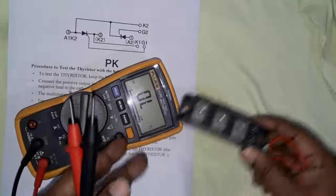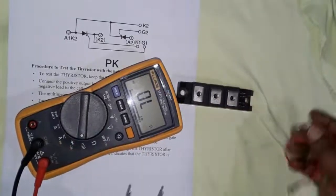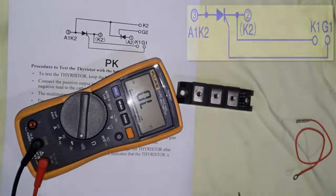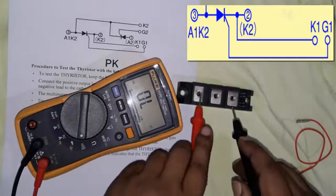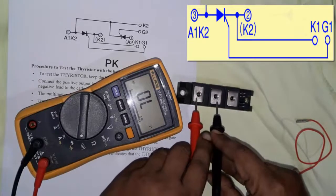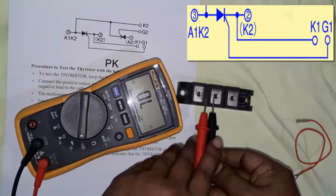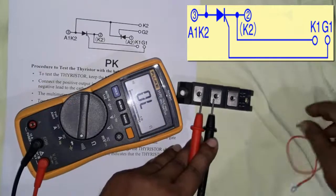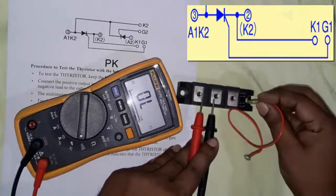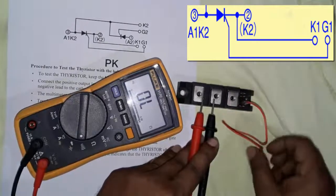We use the multimeter probes with red probe for anode and black probe for cathode. Here we're touching the red probe to anode terminal three and black probe to cathode terminal two, testing gate one.